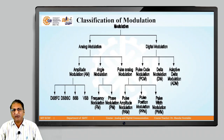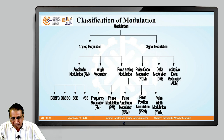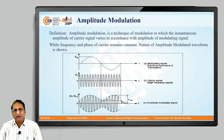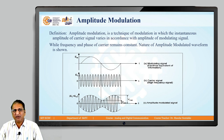In the previous lecture, we discussed the classification of modulation. Modulation is classified as analog modulation and digital modulation. Today we are going to discuss in detail what is AM. AM means amplitude modulation. It is a technique of modulation in which the instantaneous amplitude of the carrier signal varies in accordance with the amplitude of the modulating signal, while the frequency and phase of the carrier remain constant.